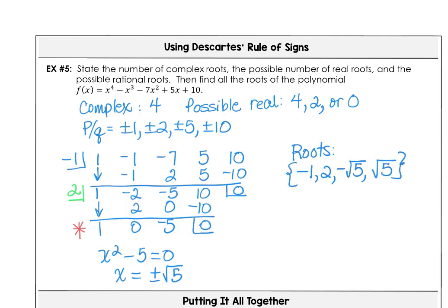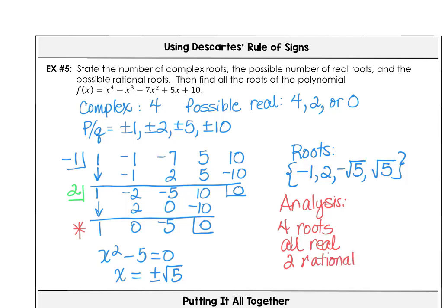Analyzing what we discovered: we ended up with 4 roots, all of them real numbers. Two of them were rational — negative 1 and positive 2 — and two of them were irrational — positive √5 and negative √5.